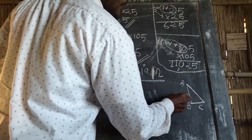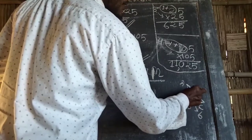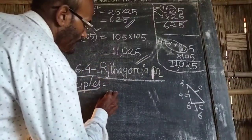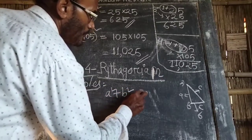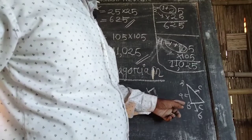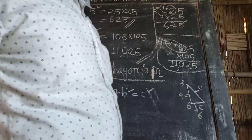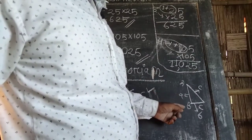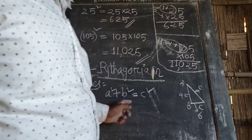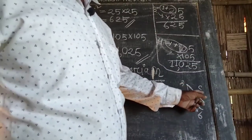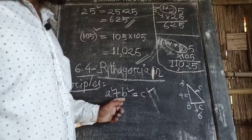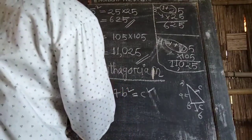Next is section 6.4, Pythagorean triples. We have a right triangle with sides a, b, and c. The Pythagorean formula is: a squared plus b squared equals c squared. If BC is the base and AC is the hypotenuse, then perpendicular squared plus base squared equals hypotenuse squared.